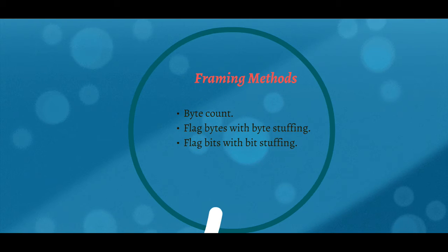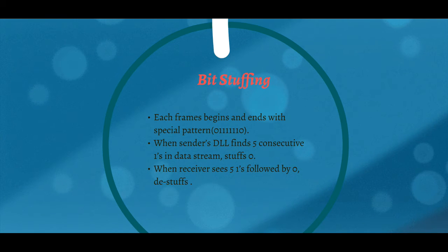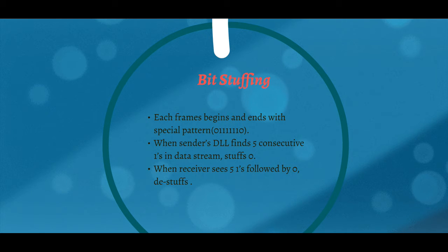Now let's discuss about bit stuffing. Each frame begins and ends with a special pattern. When the sender's Data Link layer finds five consecutive ones in the data stream, it stuffs a zero — meaning if the Data Link layer finds five consecutive ones, it adds an extra zero. When the receiver sees five ones followed by a zero, it destuffs — meaning if the receiver's Data Link layer finds five consecutive ones followed by a zero, it erases that zero.